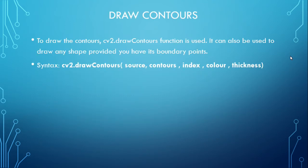To draw contours, the cv2.drawContours() function is used. It can also be used to draw any shape provided you have its boundary points. The syntax is: cv2.drawContours(source_image, contours, index, colour, thickness).